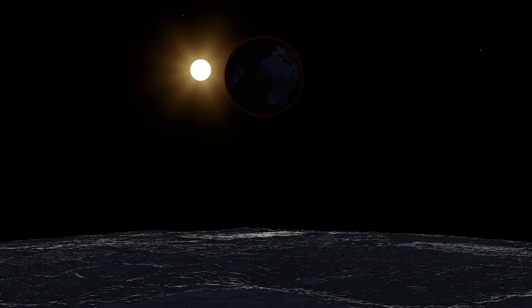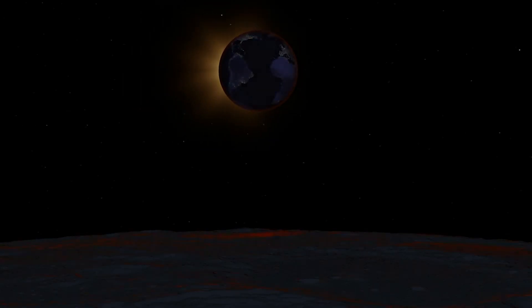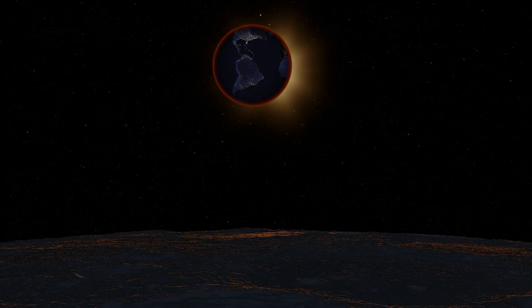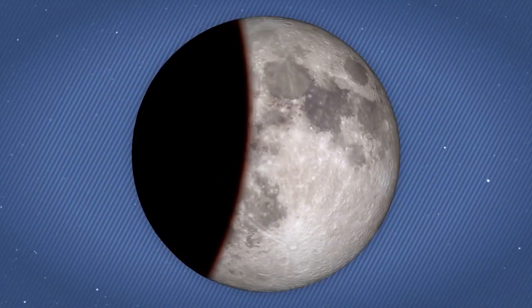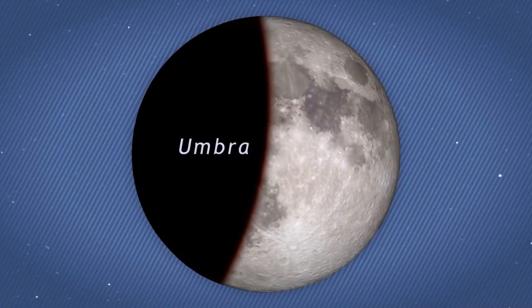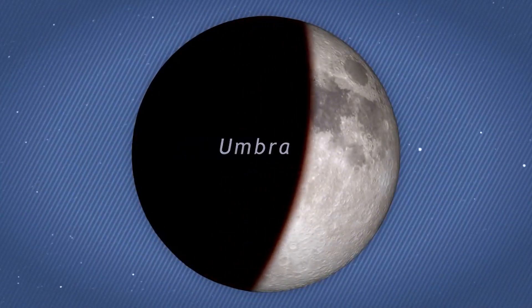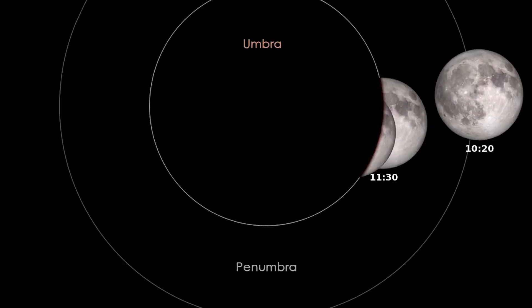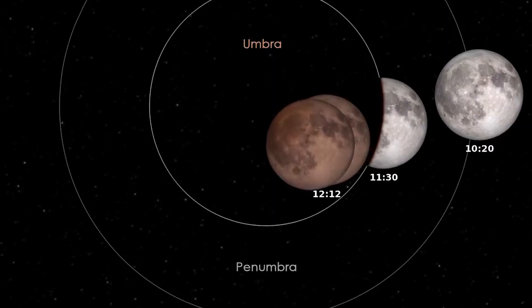During the lunar eclipse, Earth's shadow keeps the moon from being seen. As the moon passes into the central part of Earth's shadow, called the umbra, it darkens dramatically. Once it is entirely within the umbra, the moon appears orange or reddish.